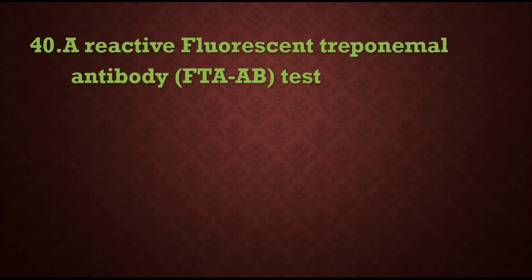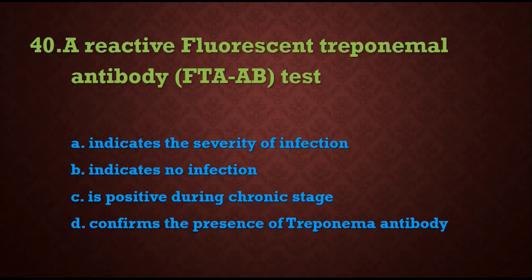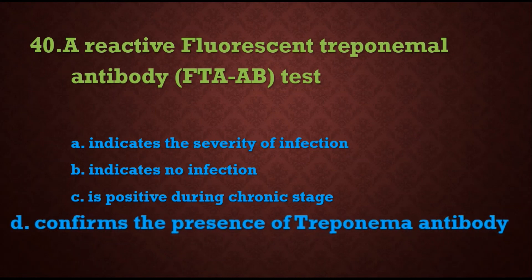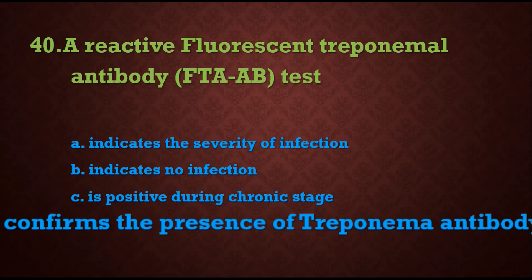Question 40: A reactive fluorescent treponemal antibody absorption (FTA-ABS) test — options are: A) indicates the severity of infection, B) indicates no infection, C) is positive during chronic stage, D) confirms the presence of treponemal antibody. The answer is D) it confirms the presence of treponemal antibody. This is all about series 2; in series 3 we will go from questions 41 onwards. Thank you.